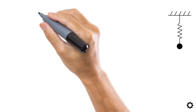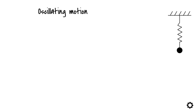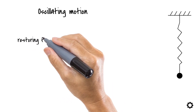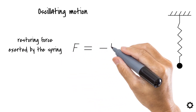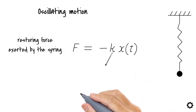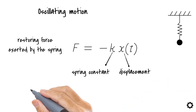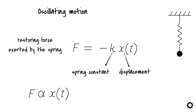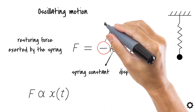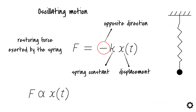We can understand this further with the mass-spring system. Obviously we have an oscillating motion here — the mass that bounces up and down periodically. We also have a restoring force exerted by the spring, which is given by F equals minus k times x(t), where k is the spring constant and x(t) is the displacement. This means that the restoring force is proportional to the displacement. What's more, the negative sign indicates that the restoring force acts in a direction opposite to the displacement, fulfilling all key points mentioned in the definition.